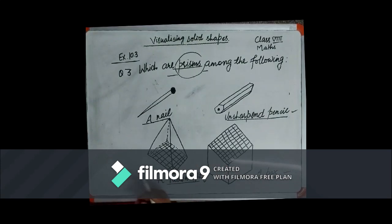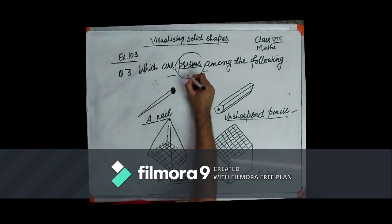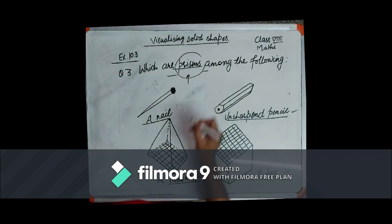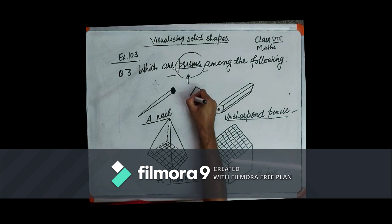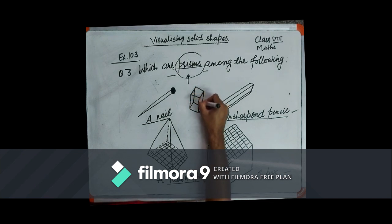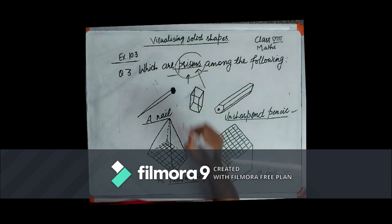Next question is question number three: which are prisms among the following? First of all, we must try to understand what prisms are. Prisms are three-dimensional polyhedrons having the same base and top — any base you can say. If the base and the top are congruent, then that particular shape belongs to the prism family.